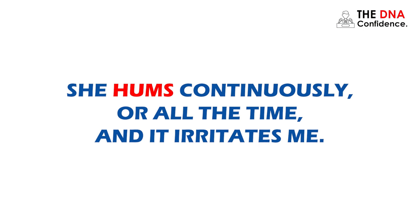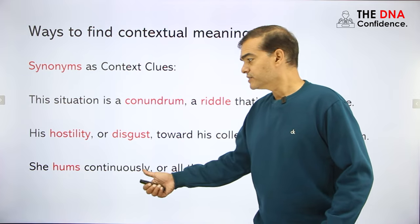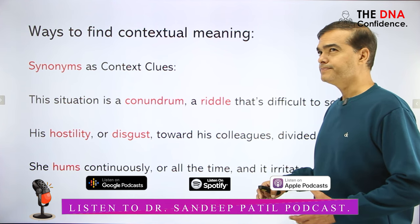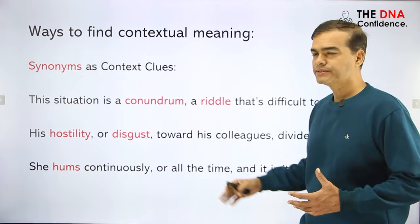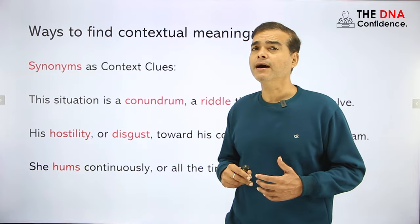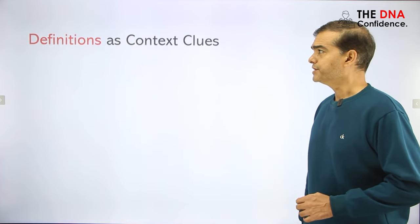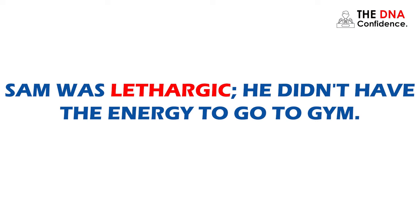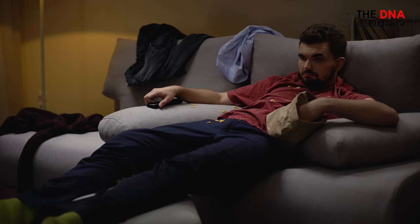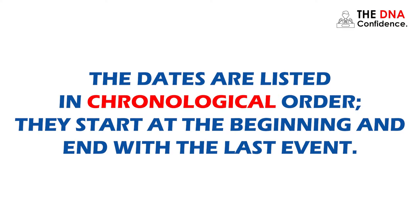Another example: 'She hums continuously, or all the time, and it irritates me.' You may not know what 'hums' means, but from the synonym 'continuously' or 'all the time,' you can figure out the meaning. Now, definitions can also be given for context. For example: 'Sam was lethargic' — definition follows: he didn't have the energy to go to the gym or office. Lack of energy is called lethargic.